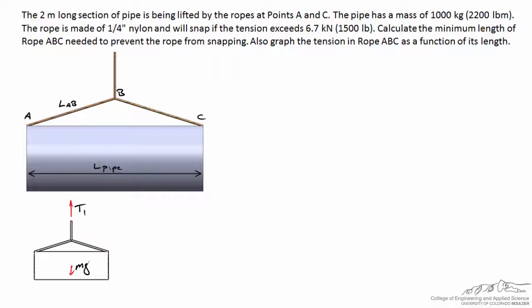Because it's a static system, the sum of forces must equal zero, meaning the sum of all y-components of forces equals zero. T1 acts in the positive y direction and Mg acts in the negative y direction, so their sum equaling zero gives us the unsurprising result that the tension T1 is simply equal to the weight of the pipe Mg.